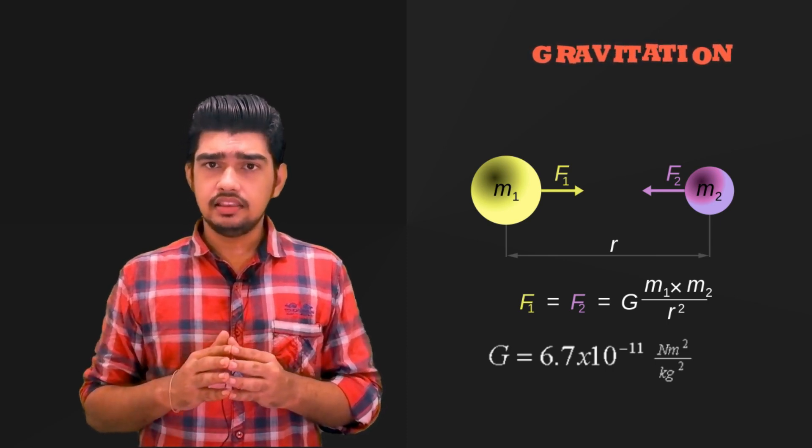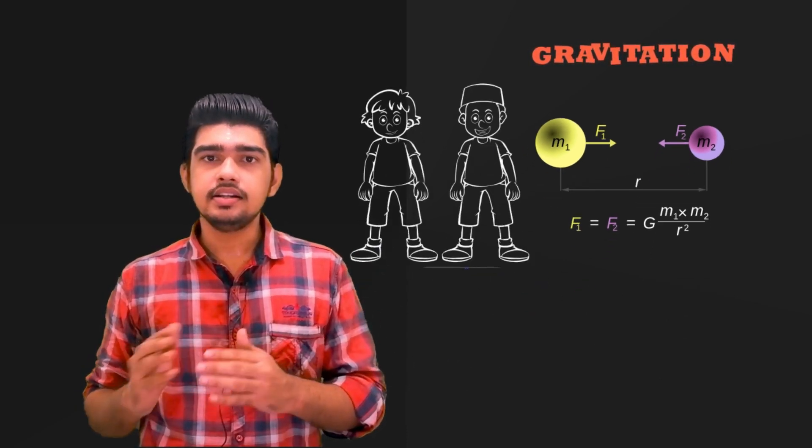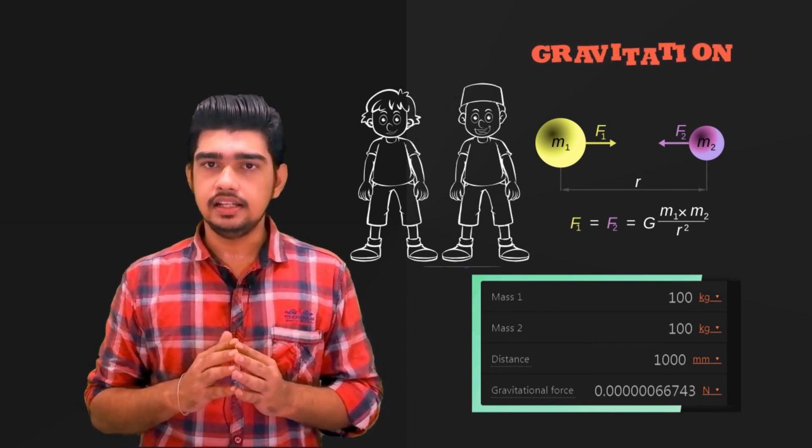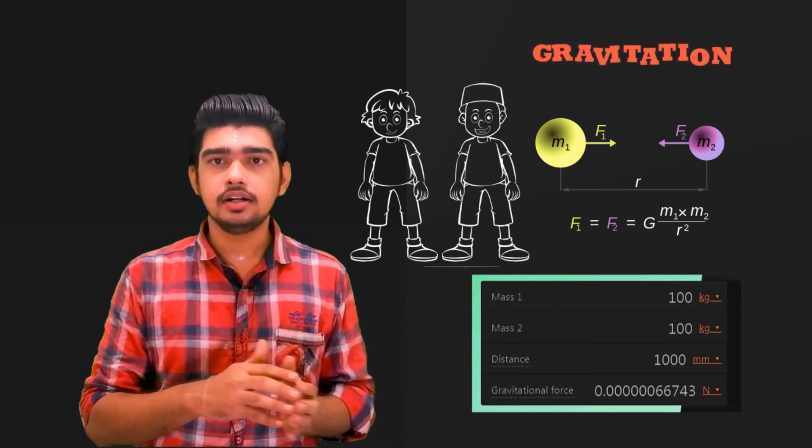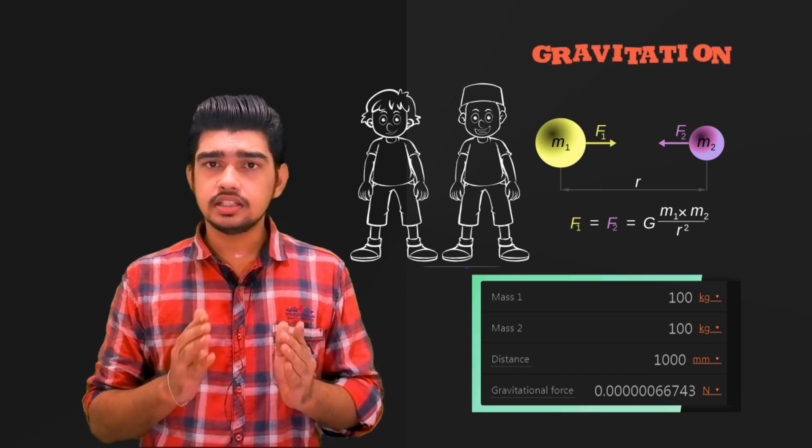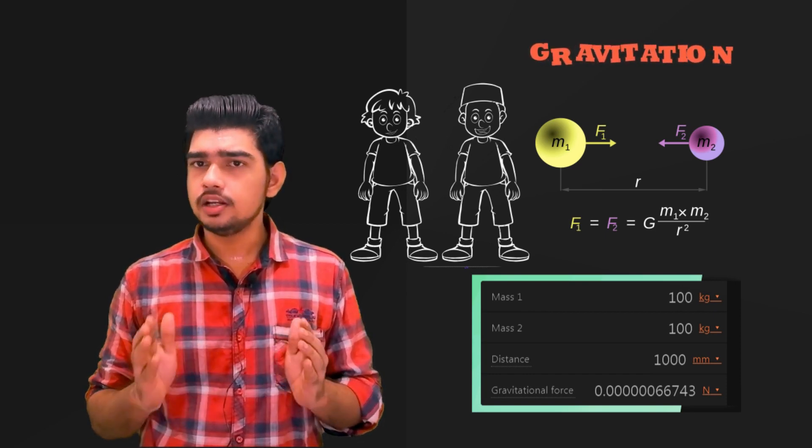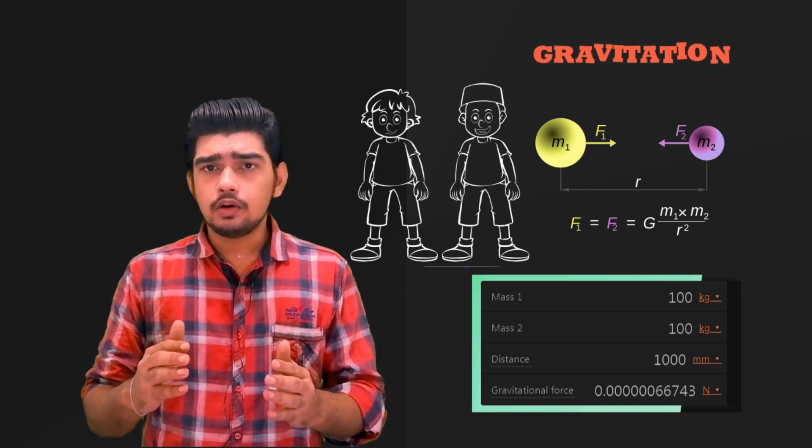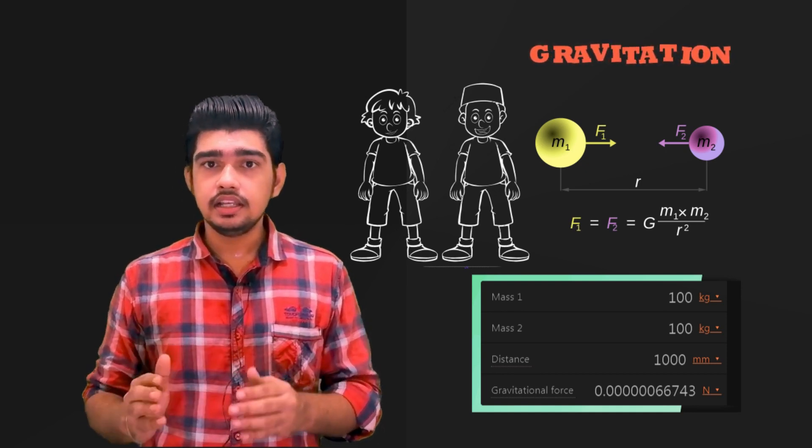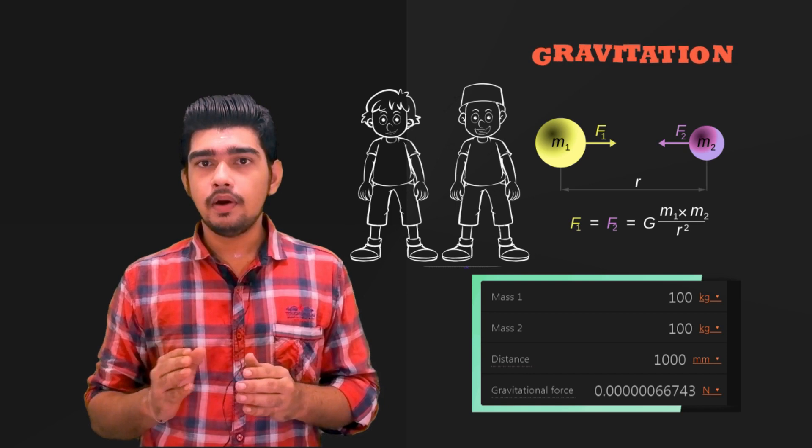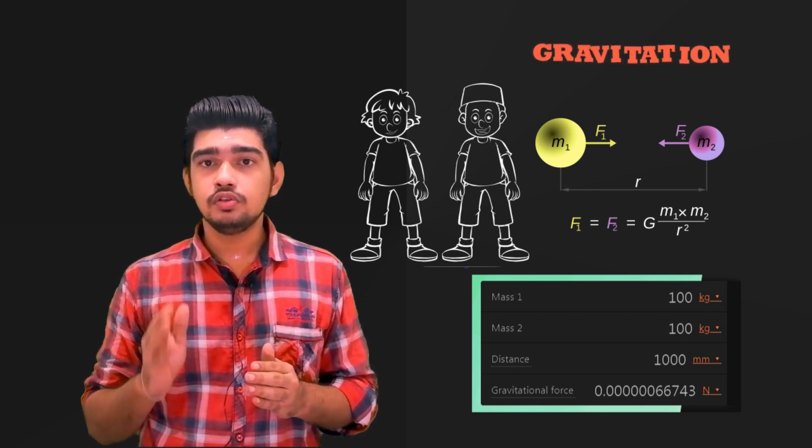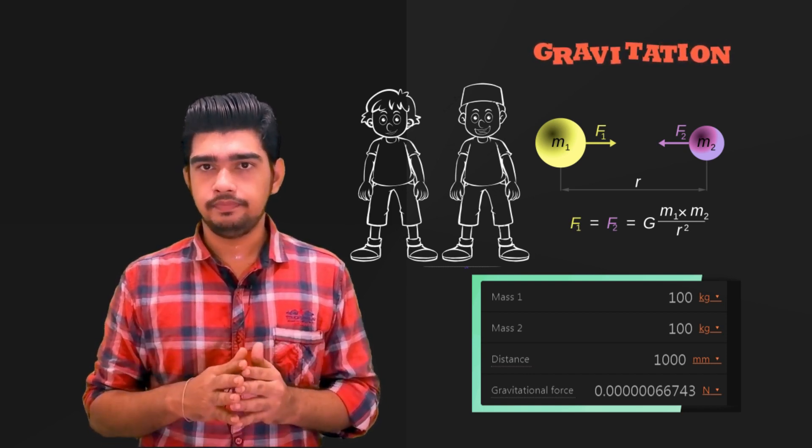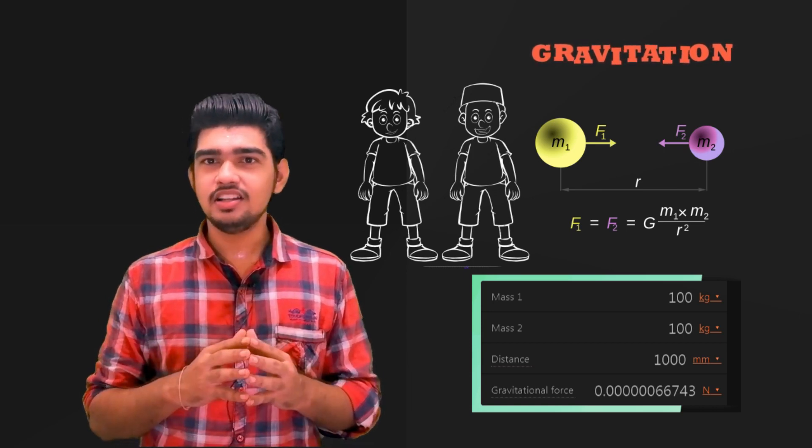Let us understand this with an example. Consider your mass is 100 kg and your friend's mass is also 100 kg and you both stand 1 meter or 1000 millimeter apart from each other. If you calculate the gravitational force it is found to be 0.0000006743 Newton. See how much small this is?